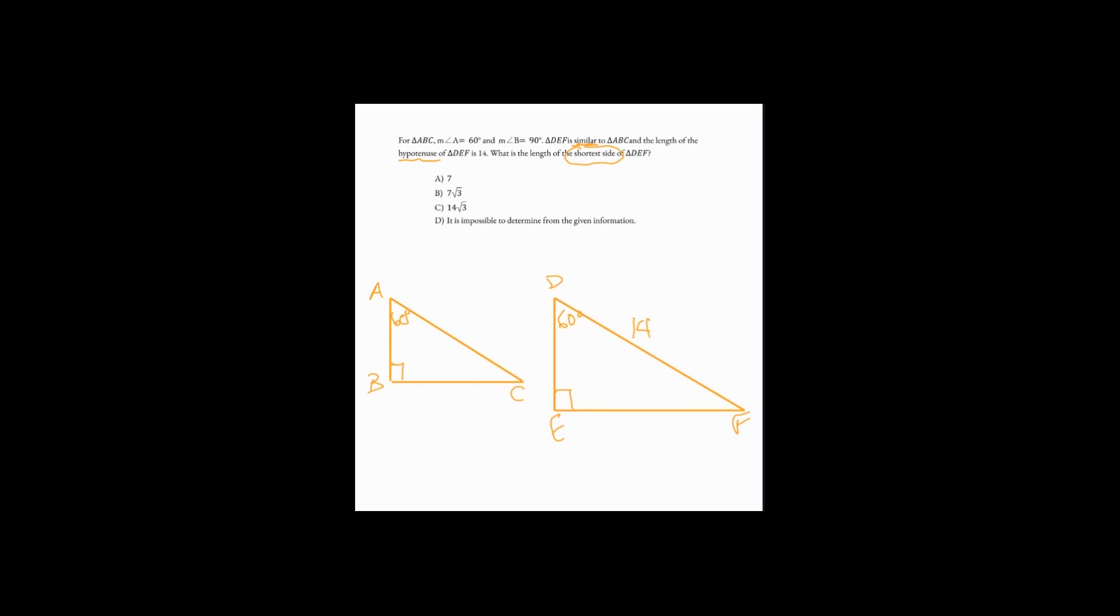Now, with a geometry problem like this, if the figure is not provided, you always want to draw it out on your scratch paper. Even if it is provided, you usually want to draw it out since you can't notate the figure on the screen itself. So we've got the triangles here. We've noted something about the similar, the implications of them being similar, that their angles are equal.